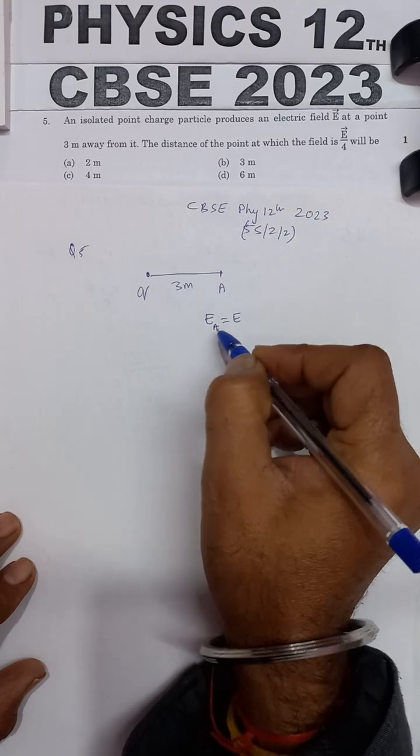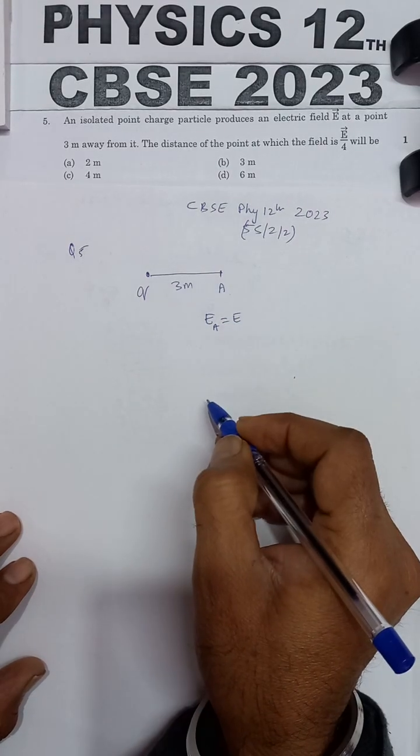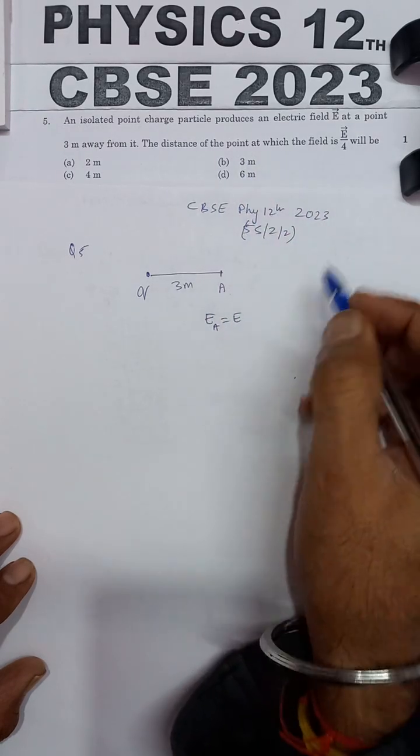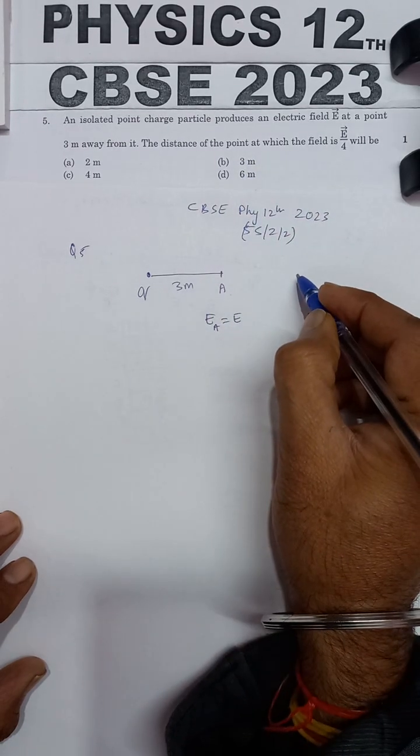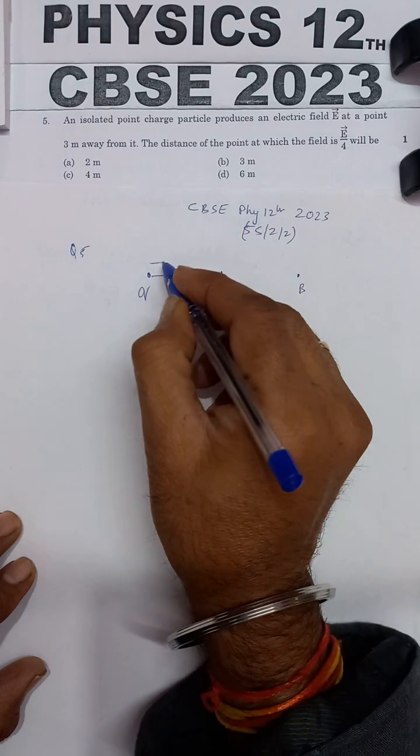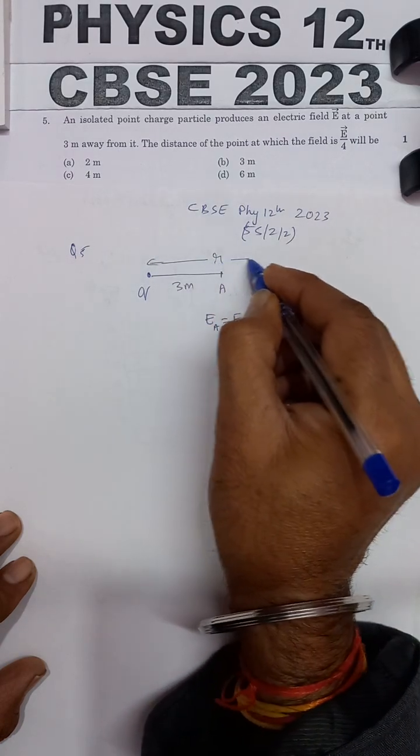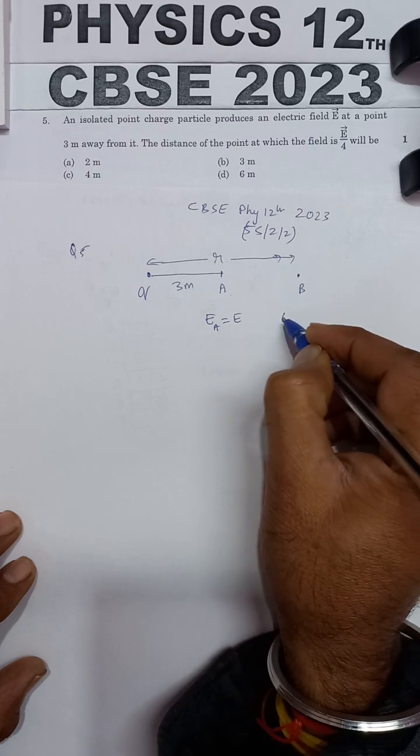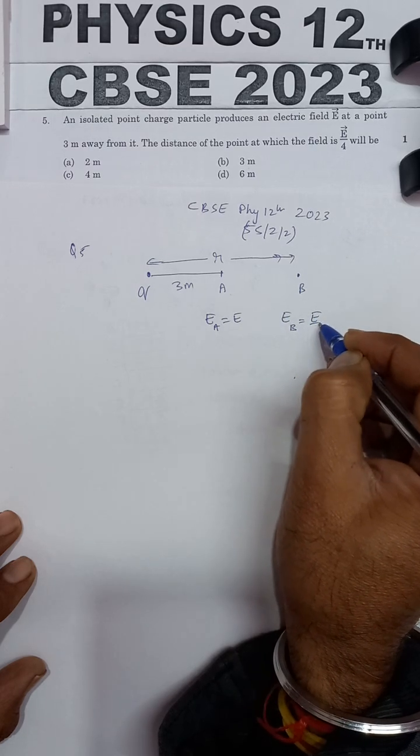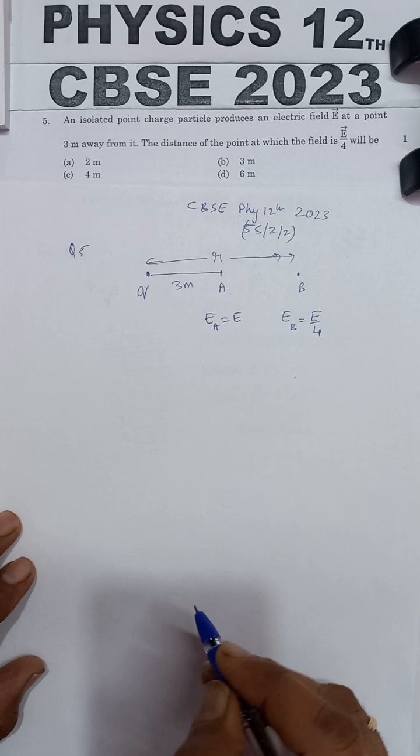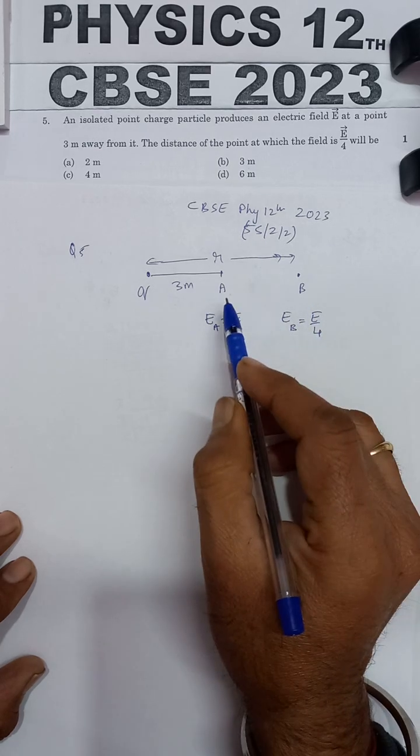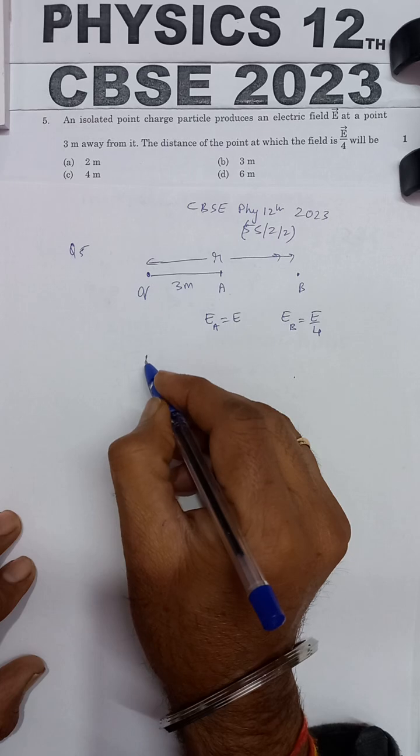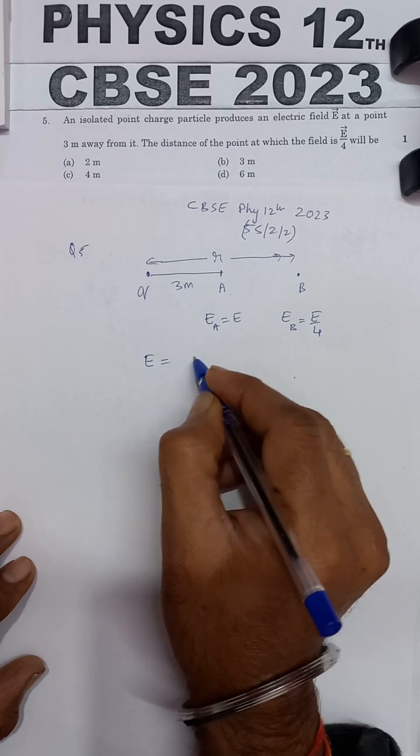Suppose we are naming this point as A. The electric field at point A is equal to E. Now the distance of the point at which the electric field is E/4—suppose this is point B whose distance is to be found out such that the electric field at point B is given equal to E/4. So electric field at point B is one fourth of the electric field at point A.